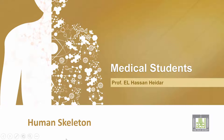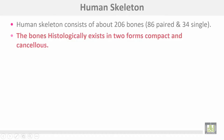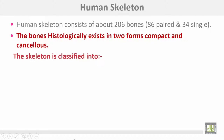Human skeleton. The human skeleton consists of about 260 bones, 86 paired and 34 single bones. The bones histologically exist in two forms: compact and cancellous bones.